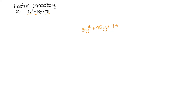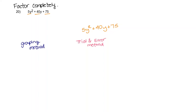You can choose whichever method you'd like as long as you get the right answer. The first method we're going to try is the grouping method. The second method is the trial and error method, and the third method is the Berry method.